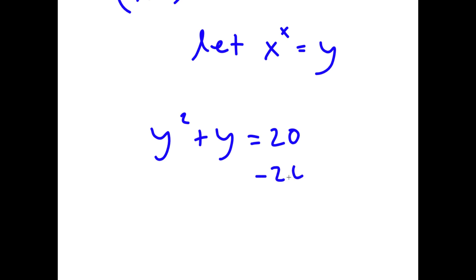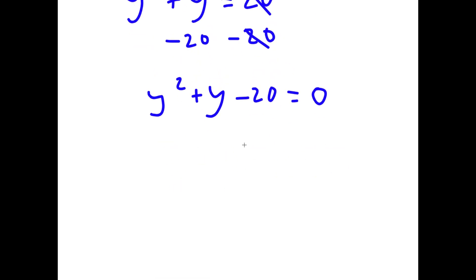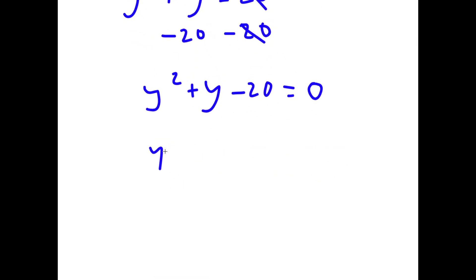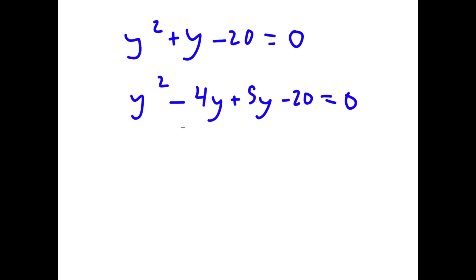If I subtract 20 on both sides, I get y squared plus y minus 20 equals zero. To solve this, I'm going to factor it. I can rewrite y as negative 4y plus 5y. Factoring by grouping, starting with y squared minus 4y, factoring out y gives y times y minus 4.